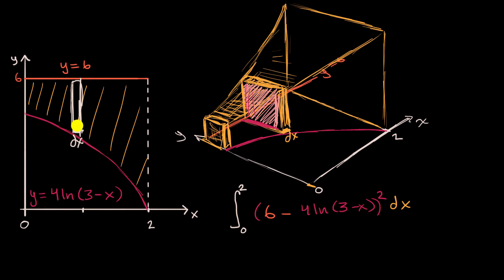And instead of just multiplying dx times the difference between these functions, we're going to square the difference of these functions, because we're visualizing this three-dimensional shape, the surface area of this three-dimensional shape, as opposed to just the height of this little rectangle.